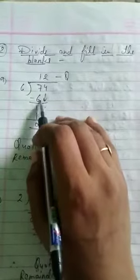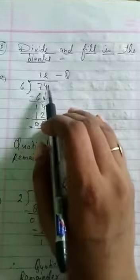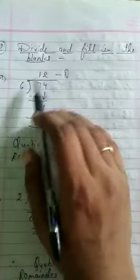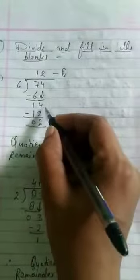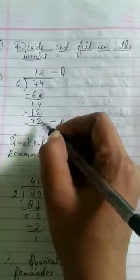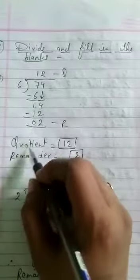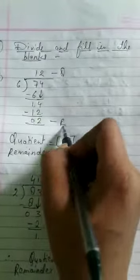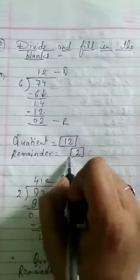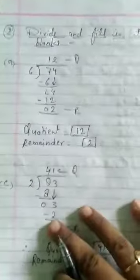6 ones are 6. 7 minus 6 is 1. 4 will come down, it will be 14. 6 twos are 12. 4 minus 2 is 2. 1 minus 1 is 0. So quotient is equal to 12. Q for quotient, R for remainder. Quotient is equal to 12, remainder is equal to 2.